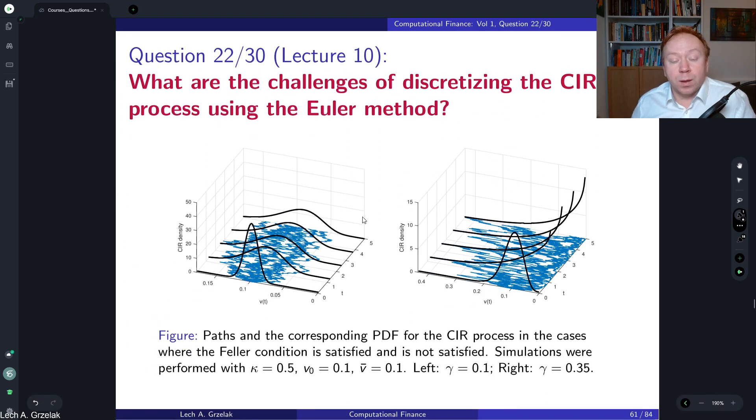If we go further, so this is a simulated number of paths in two cases. In the first case is where we have the Feller condition satisfied. So we start with some initial point 0.01 and it's the same here. This is the case where the Feller condition is not satisfied.